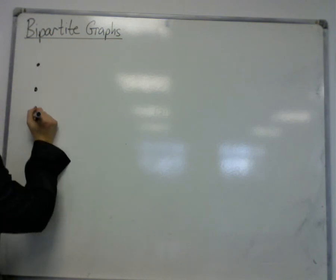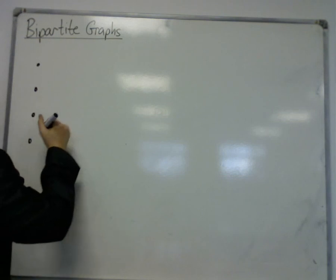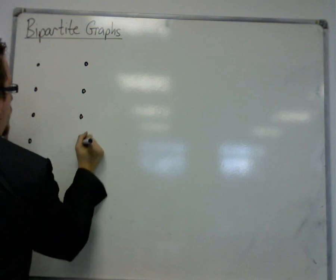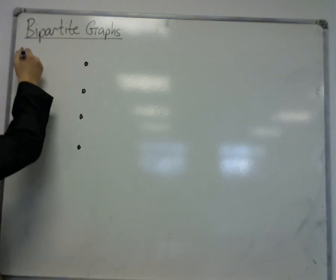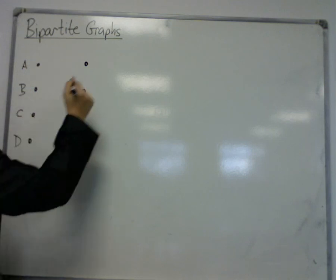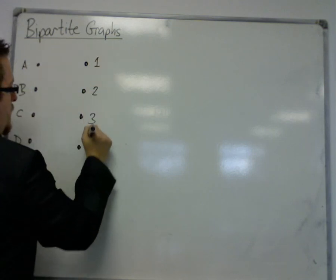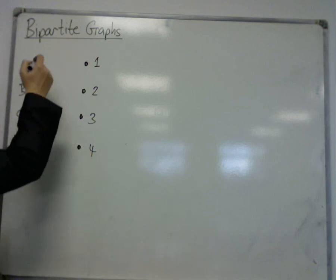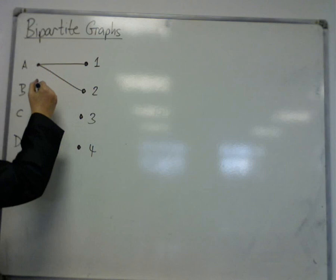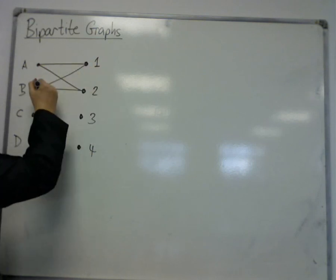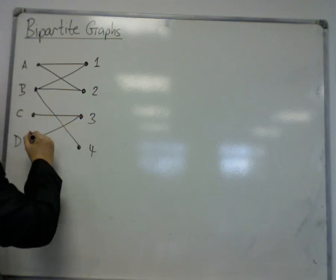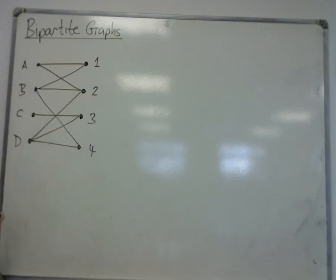So here are a series of vertices on the left, and here are a series of vertices on the right. This might be A, B, C and D, and these could be numbered 1, 2, 3 and 4, for example. And then I could connect these by edges, like so.